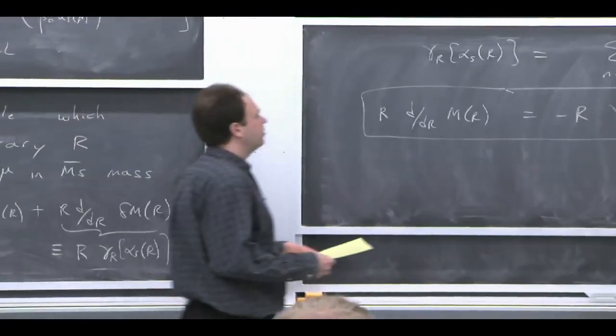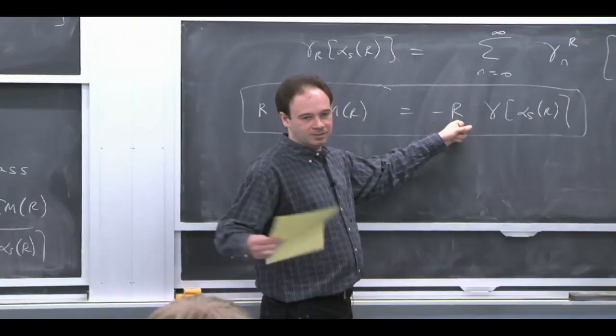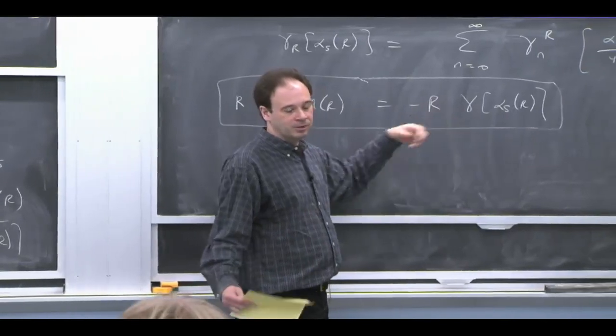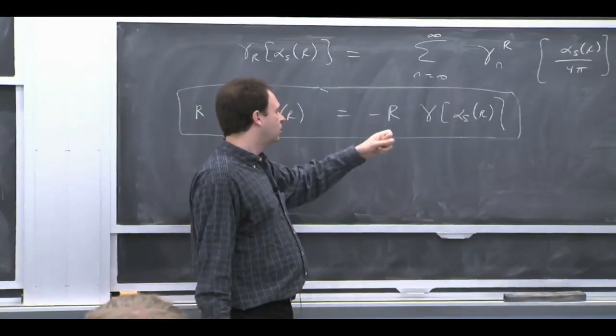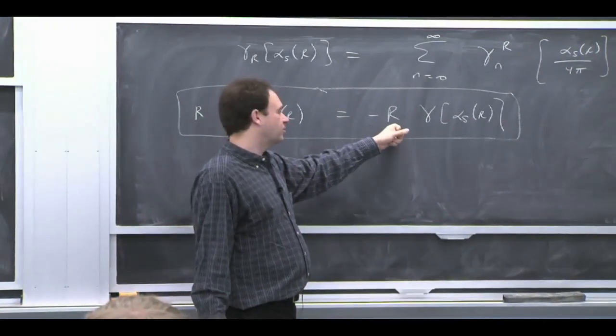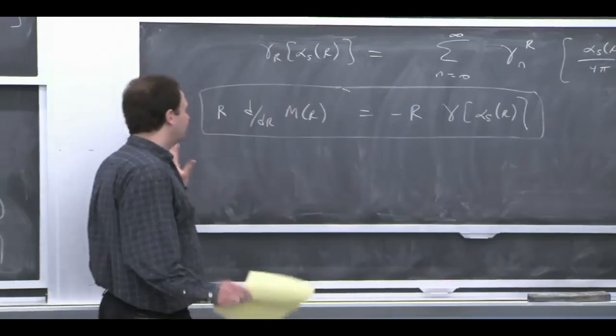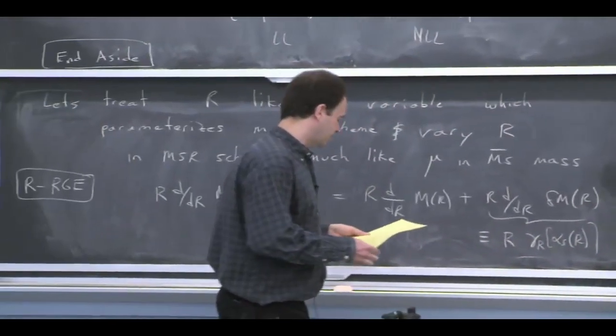And the fact that we got this power, which was 1, is exactly related to the fact that it was a U equals a half renormalon. If we looked at the renormalons that are further out, like U equals 1 would give R squared. We haven't seen really enough to identify that, but that's true.